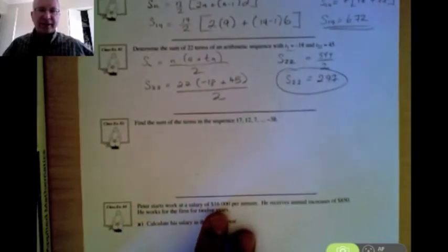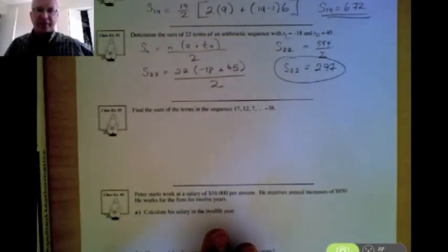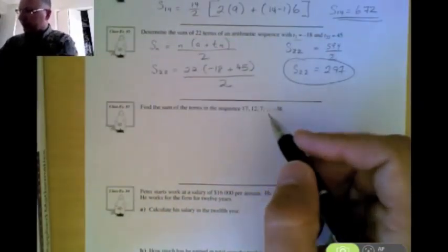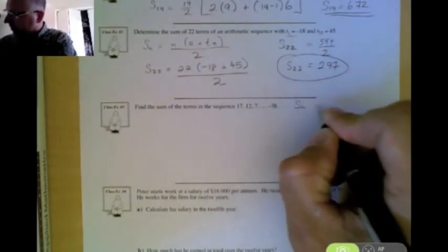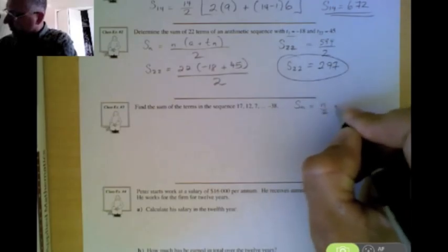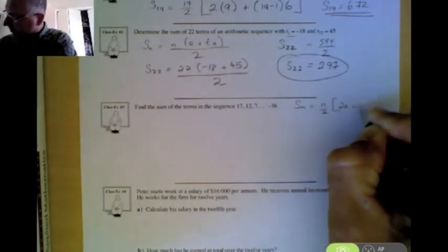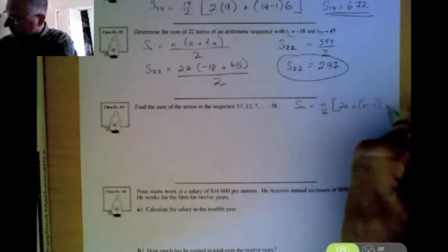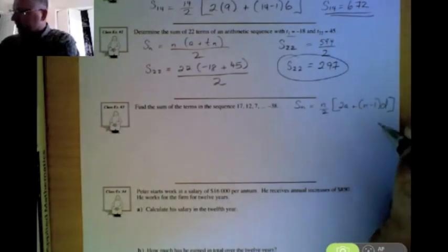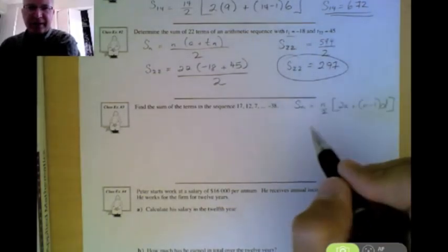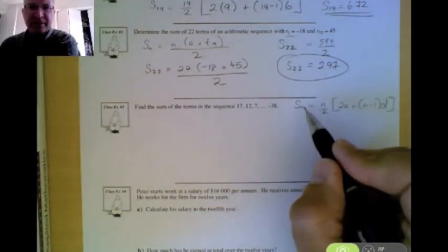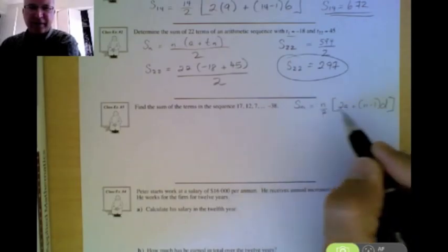The next question asks us to find the sum of the terms in this following sequence. So most people say, okay, well, let's write out our formula. S of n equals n over 2 times 2a plus n minus 1 times d. And as soon as they write out that formula, they go, well, hold on a minute. I need to know the number of terms in this particular series to be able to find its sum.